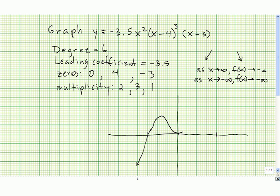And then I need to get to the zero of 4. Four is a zero of multiplicity 3, so I know the graph is going to pierce through and bend a little bit. So it's going to go a little bit like this.